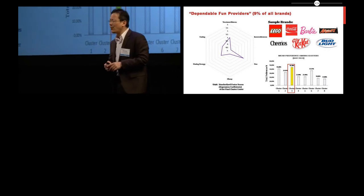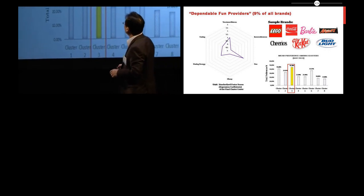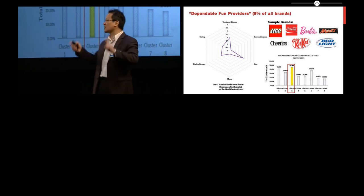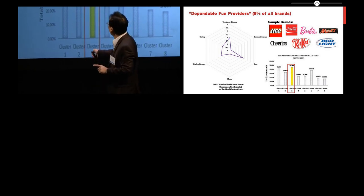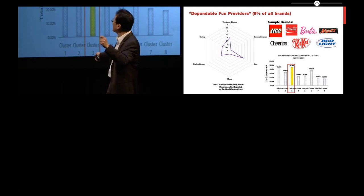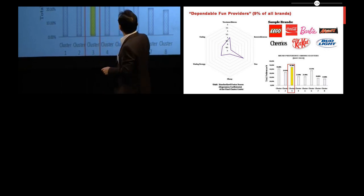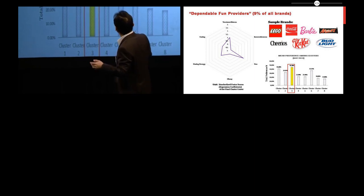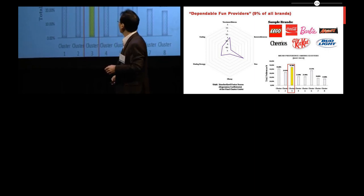The dependable fun are doing quite well. These are the one segment where we found two spikes. They're doing very well on the trustworthiness, this is something we can trust, and they are fun at the same time. So these two seem to be a good recipe for success. So Legos, Barbie, Mars, doing very well in terms of brand preference.